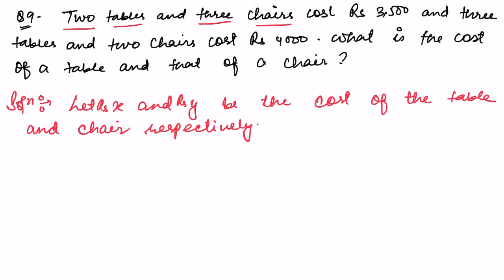So 2 tables and 3 chairs. From the question, we can write down 2 tables, that is 2x, plus 3 chairs, 3y. How much does it cost? Rupees 3500. This is equation number 1.